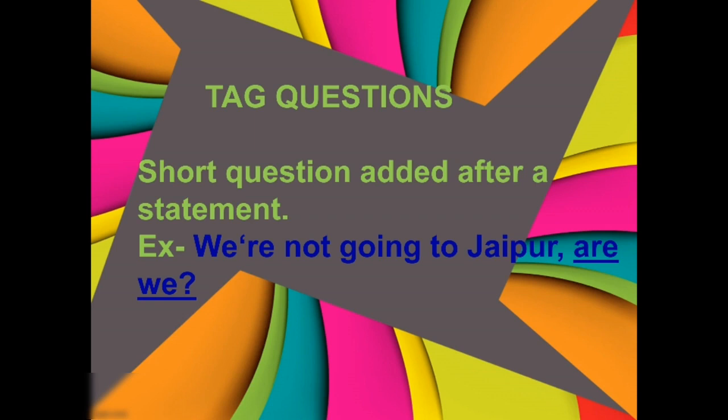Like: we are not going to Jaipur. This is a statement. But at the end, sometimes we put are we? We are not going to Jaipur — ham Jaipur nahin ja rahe hain. Are we? — kya ham ja rahe hain? This is the question. So are we — jo underlined part hai — that is a tag question. It is the question that is added after a statement. Aap chota sa question add karte ho after a statement — like we are not going to Jaipur, are we?